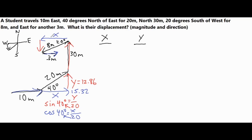Back to the components — we have the x and y components labeled. We do this same process using 20 degrees, with a hypotenuse of 8. The x component comes out to 7.52 meters and the y component comes out to 2.74 meters.